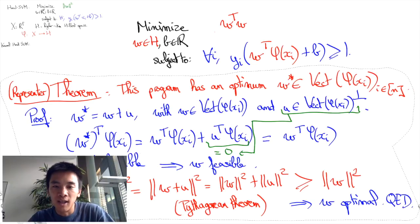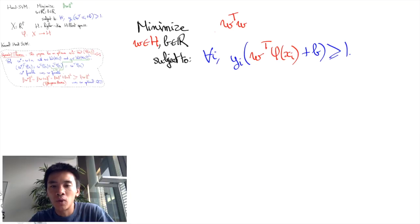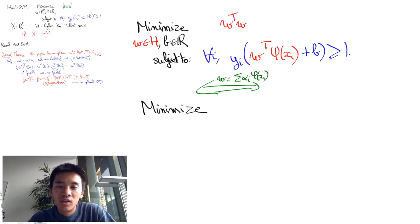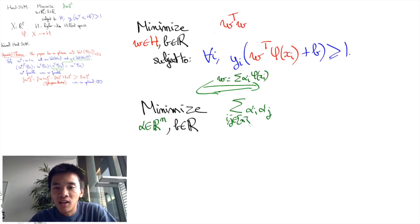The bottom line of this theorem is that the infinite-dimensional kernel hard SVM program we wrote earlier is actually equivalent to a finite-dimensional one, where W is restricted to belong to the space spanned by the phi of XI. But then by writing W equals to the sum of alpha I phi of XI, the program simply becomes minimize over alpha 1 to alpha m and b in R the sum of the alpha i alpha j phi of XI transpose phi of XJ.